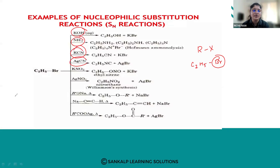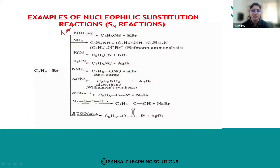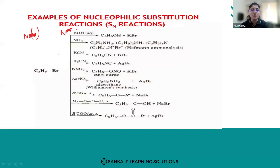The different reagents from which nucleophiles are generated include KOH or NaOH, which are strong bases. By using NaOH or KOH, the nucleophile OH⁻ is generated. In the product, the Br is replaced by OH, so what you get is an alcohol as the substituted product.